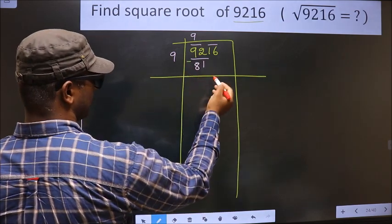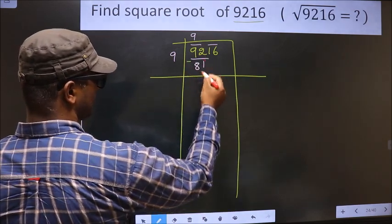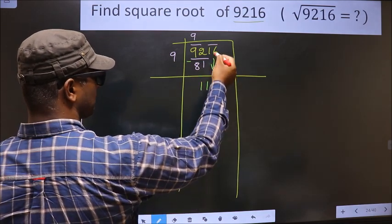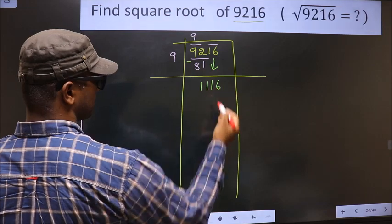Now we subtract. 2 minus 1 is 1, 9 minus 8 is 1. Now you take this pair down, making it 1116.